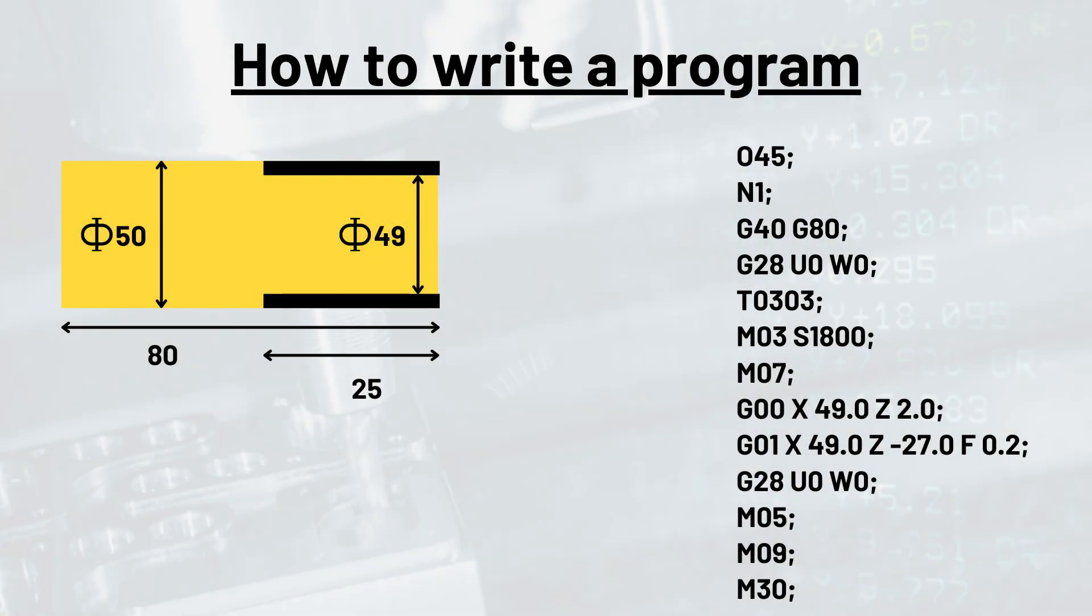In this lecture we will learn about the simplest and precise way of writing a CNC program. The very first step in writing a program is the program number, which generally starts with letter O. Let's say we have to write the 45th number of program, then we will write O45.